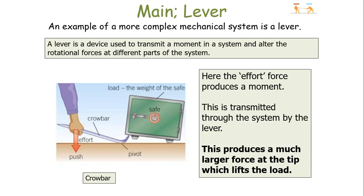An example of a more complex mechanical system is a lever. A lever is a device which is used to transmit a moment in the system and alter the forces at different parts of the system. The effort force — the force you are putting into the system — produces a moment. This is then transmitted throughout the system by the lever, which produces a much larger force at the tip of the crowbar, which lifts the load.